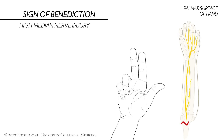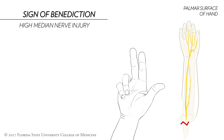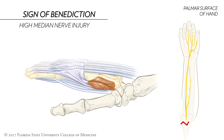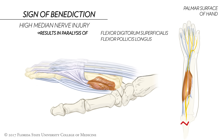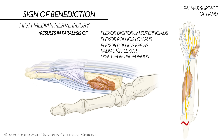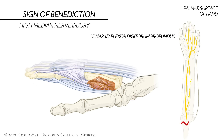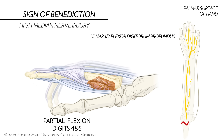Following median nerve injury, the default position is ape hand. When this person attempts to form a fist by flexing the digits, the sign of benediction is made. This results from the fact that high median nerve injury results in paralysis of flexor digitorum superficialis, flexor pollicis longus, flexor pollicis brevis, and the radial one-half of flexor digitorum profundus. Thus, the only remaining functional flexor is the ulnar one-half of flexor digitorum profundus, which results in partial flexion of digits 4 and 5, while the other digits remain extended. This position of the hand takes its name from the position of a priest's hand when he bestows blessings or benedictions.